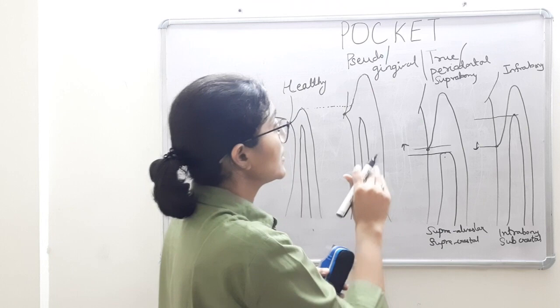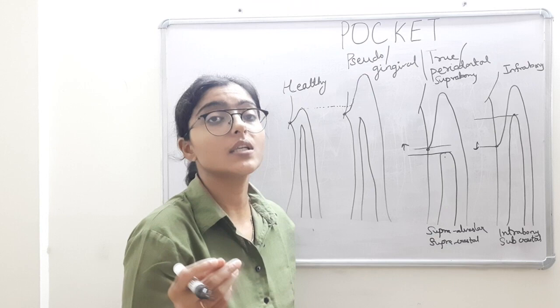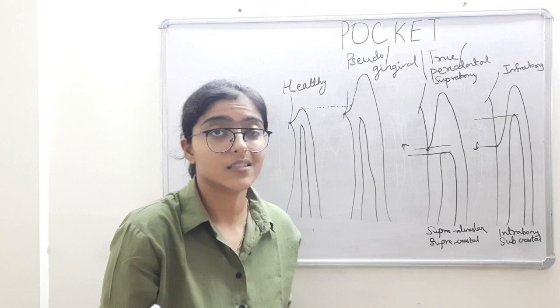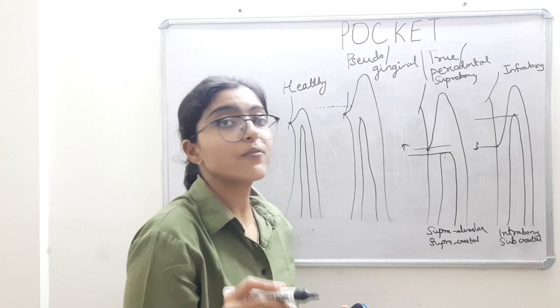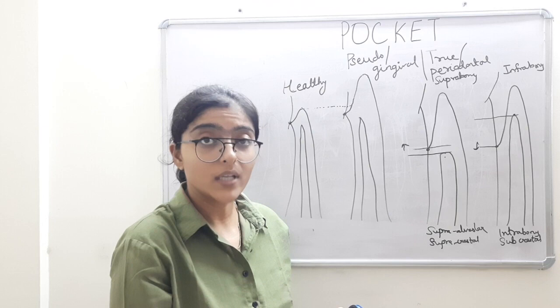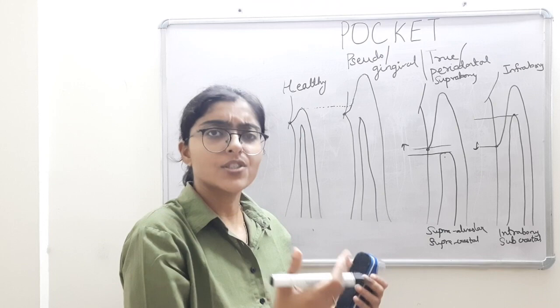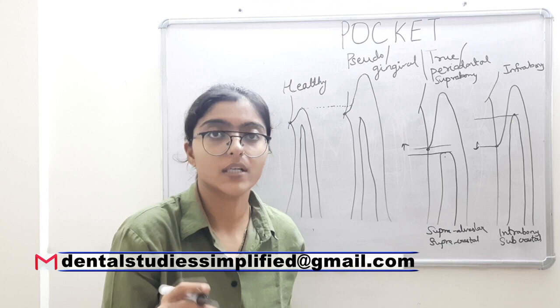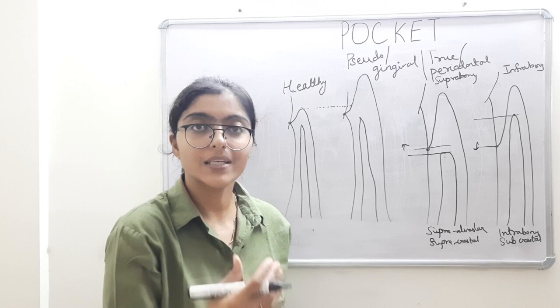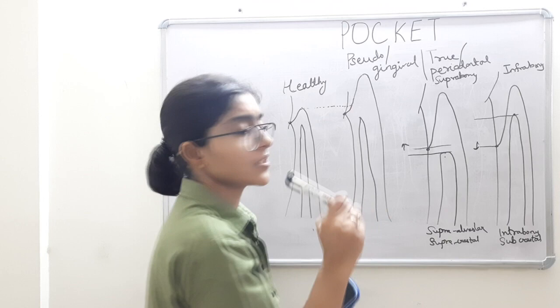Now we will proceed to the next classification, which is based on the number of surfaces involved. If only one surface on one tooth is involved, it is called a simple pocket. If more than one surface is involved, it is a compound pocket. If the pocket originates on one surface and progresses towards another surface, it is a complex pocket, also known as spiral pocket. It is very common in the furcation areas, beginning in the furcation and progressing further.